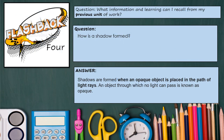In our curriculum lessons in the afternoons, we use lots of flashback four slides. This is a slide about the last previous science unit, which was all about light. How are shadows formed? The children know that when shadows are formed, an opaque object is placed in front of the light rays of the sun.